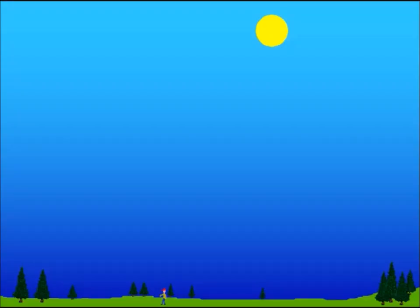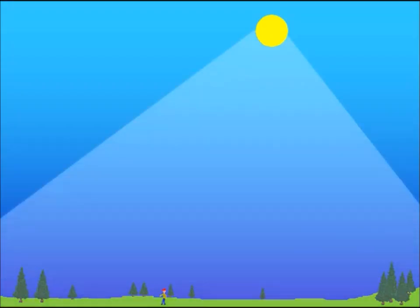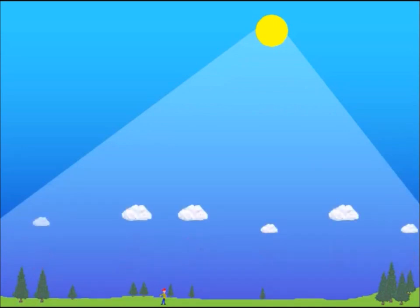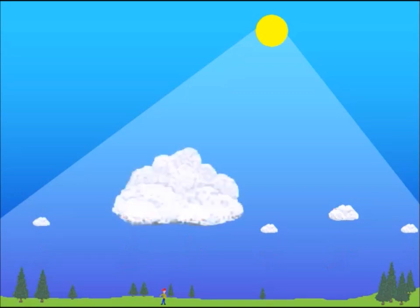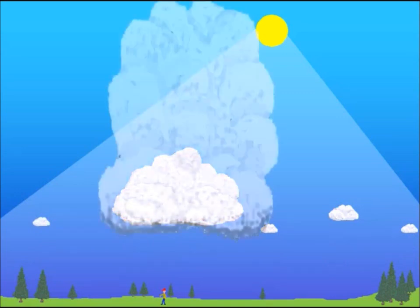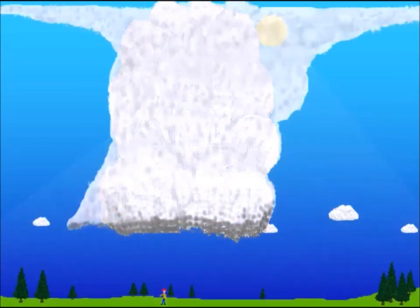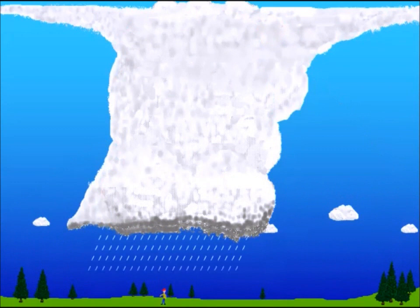On a typical summer day, heating from the sun causes air near the ground to start rising. As the air rises, it cools, and moisture in the air condenses into clouds. If the atmosphere is unstable, those clouds can grow vertically into a thunderstorm cloud.